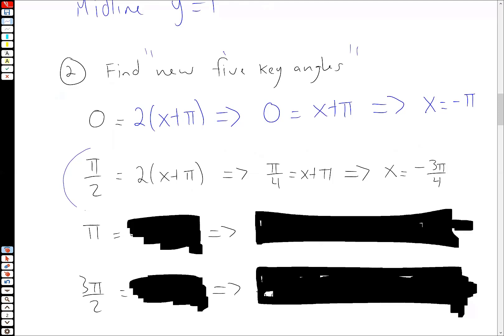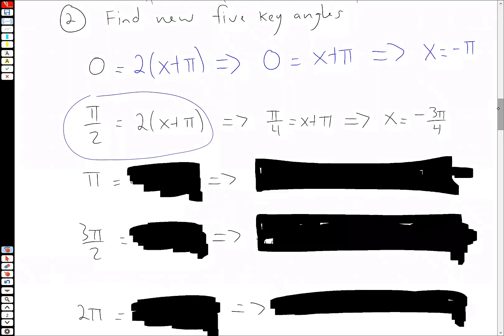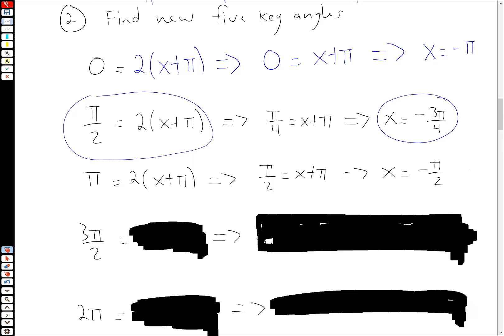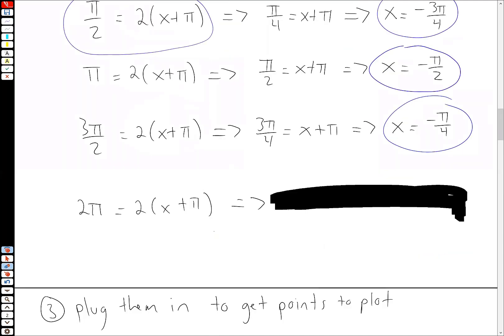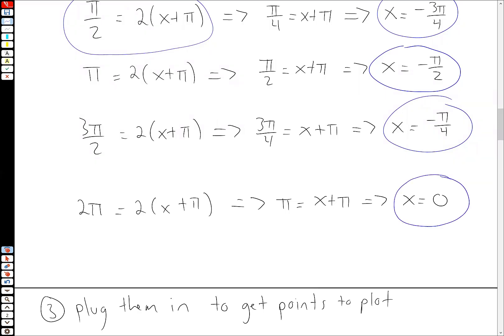Okay. So again, we take π over 2, the next key angle, set it equal to the inside of our transformed cosine function. And then we solve for X. And then do the same thing for π. We get this. Same thing for 3π over 2, we get this. And then finally for 2π, we get this.